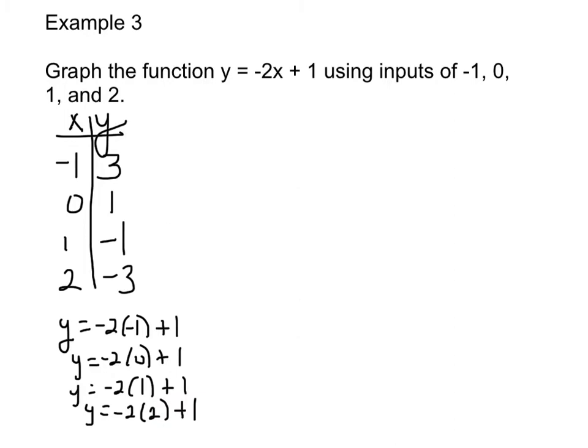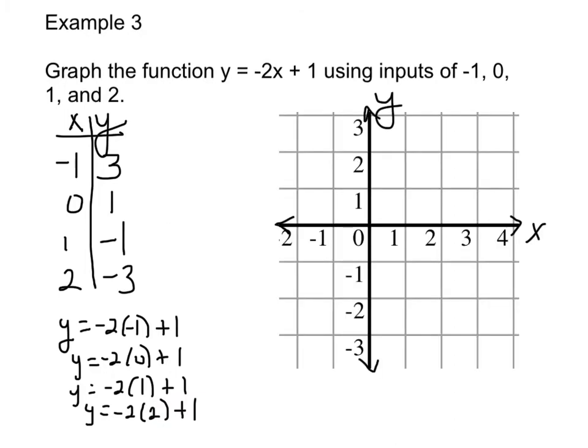We now need to graph those four points. Pause the video and draw a small coordinate plane in your notes. Now we're just going to graph our points. Negative 1, 3. 0, 1. 1, negative 1. And 2, negative 3. And there was our line.